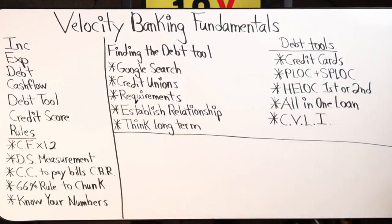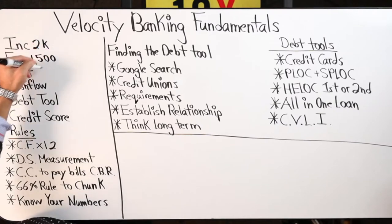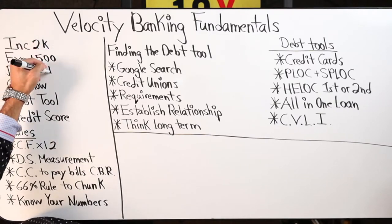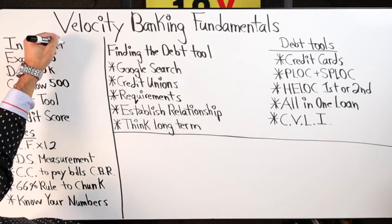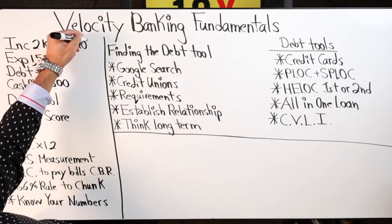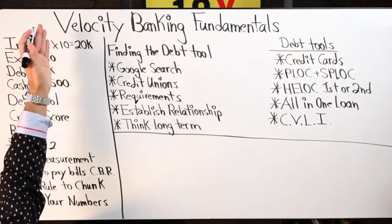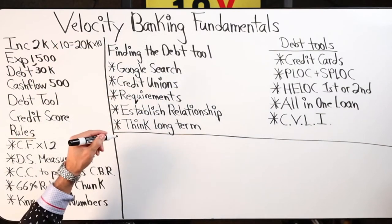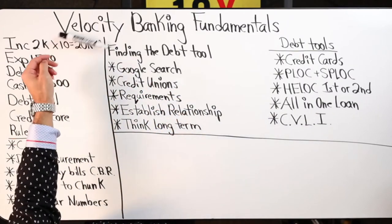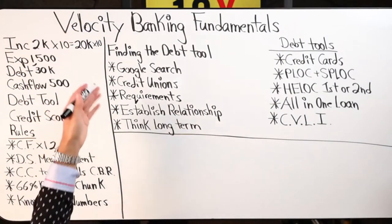To give a personal example: when I first started on my 10x journey, I was making $2,000 a month, my expenses were $1,500, my debt was just under $30k, and my cash flow was $500. I simply took that number and multiplied it by 10 — within about a year I was roughly making $20,000 a month on average. I kept the same system and said, why not 10x again? Doing it at least one time will drastically shift your positioning and how you view money.